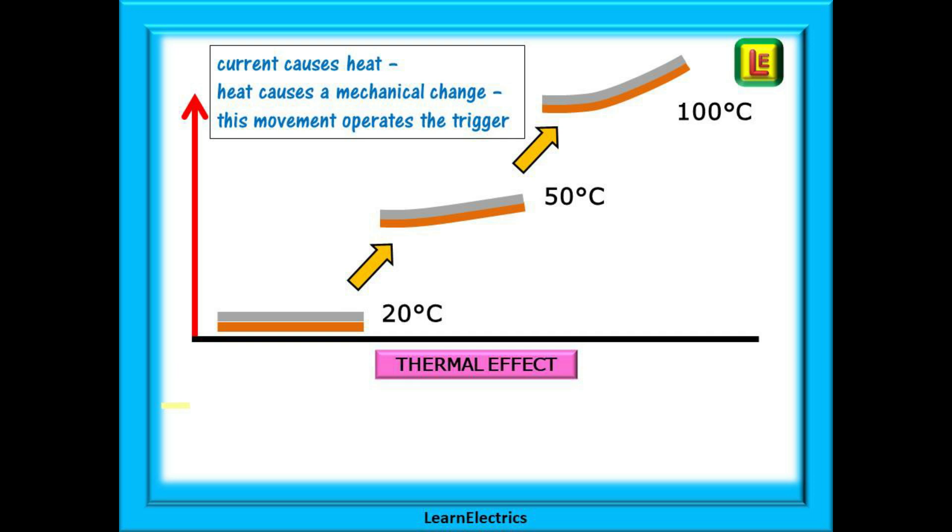As an everyday example, a kettle has a bimetallic strip. As the water boils the strip distorts with the hot water and trips the kettle switch into the off position.